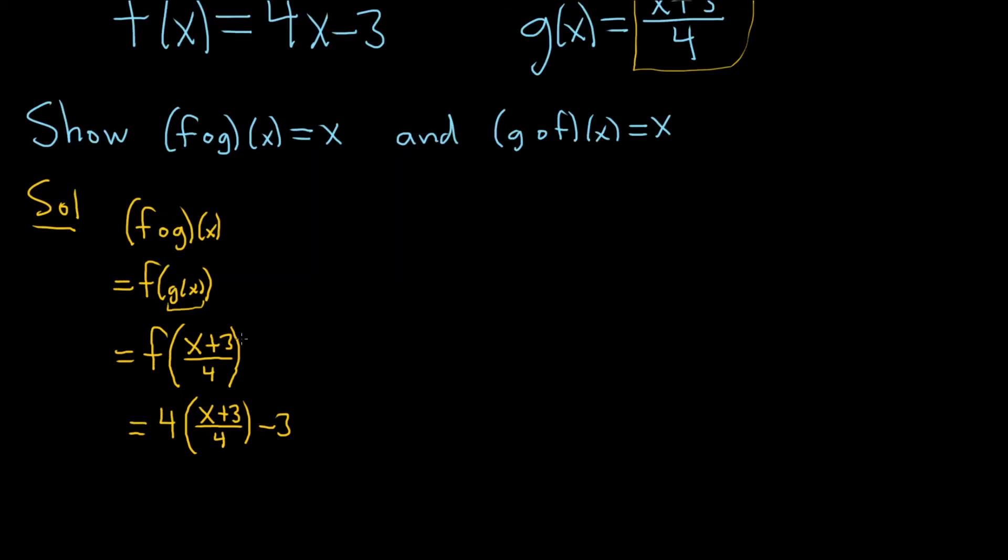So now the 4s cancel. So we have x plus 3 minus 3. And this is really cool because now the 3s will cancel. Beautiful. And it's equal to x. I love these problems because you know when you did it right because you got x. So it's really nice.